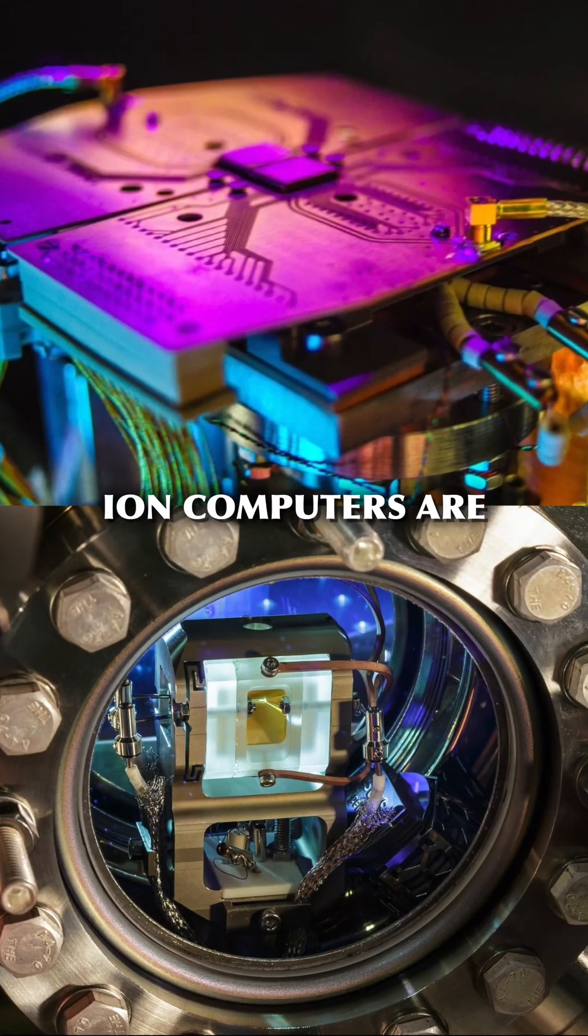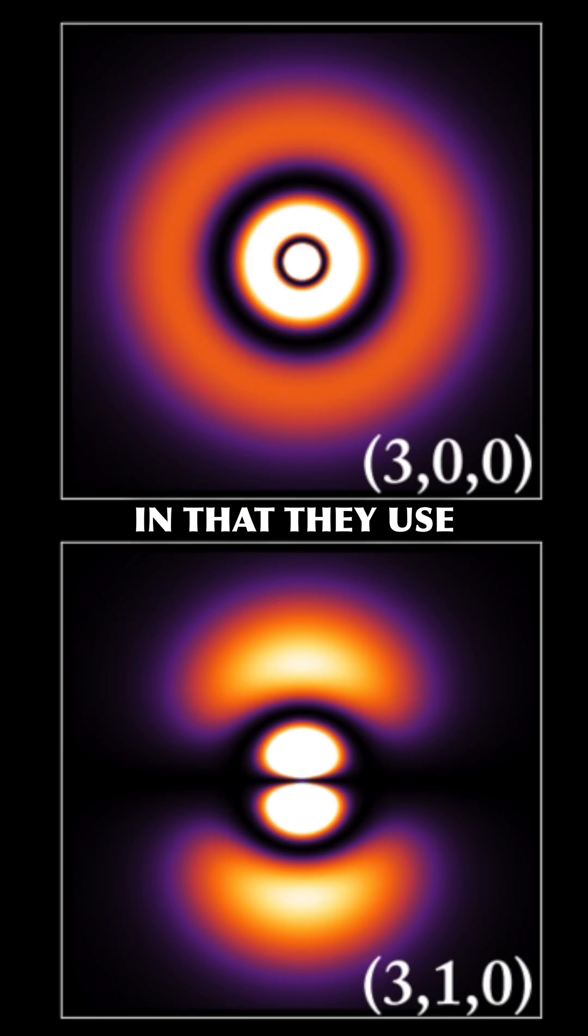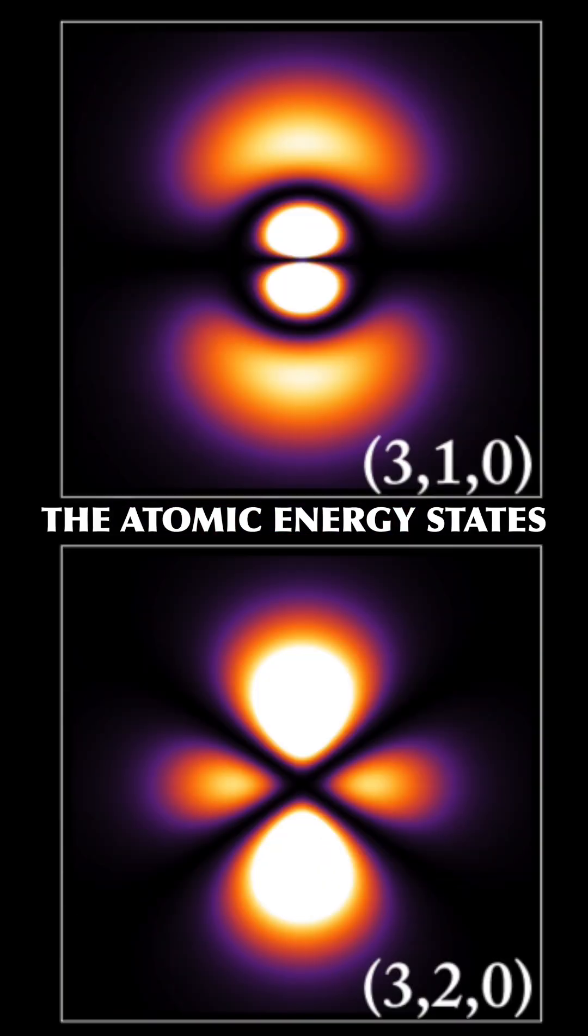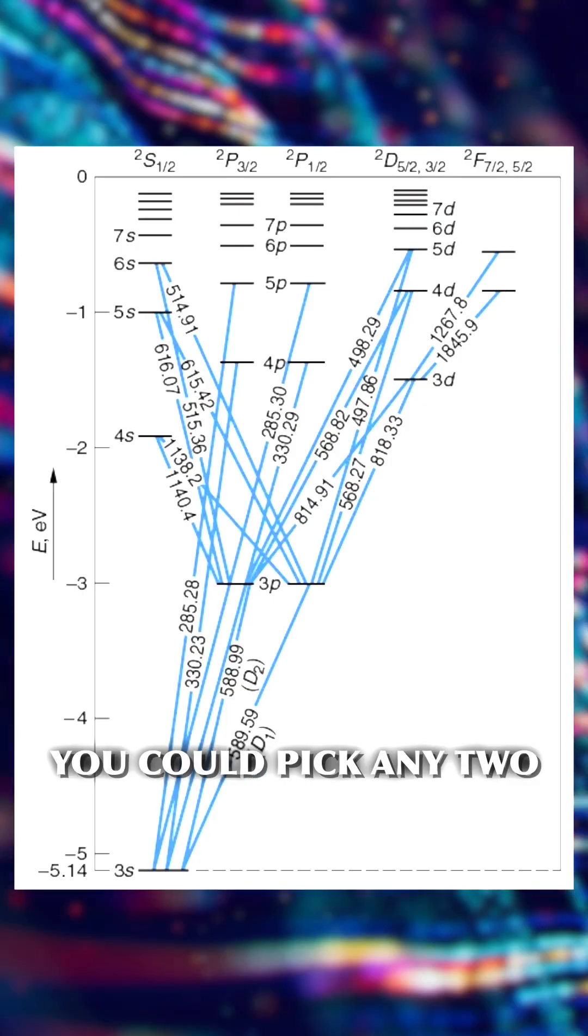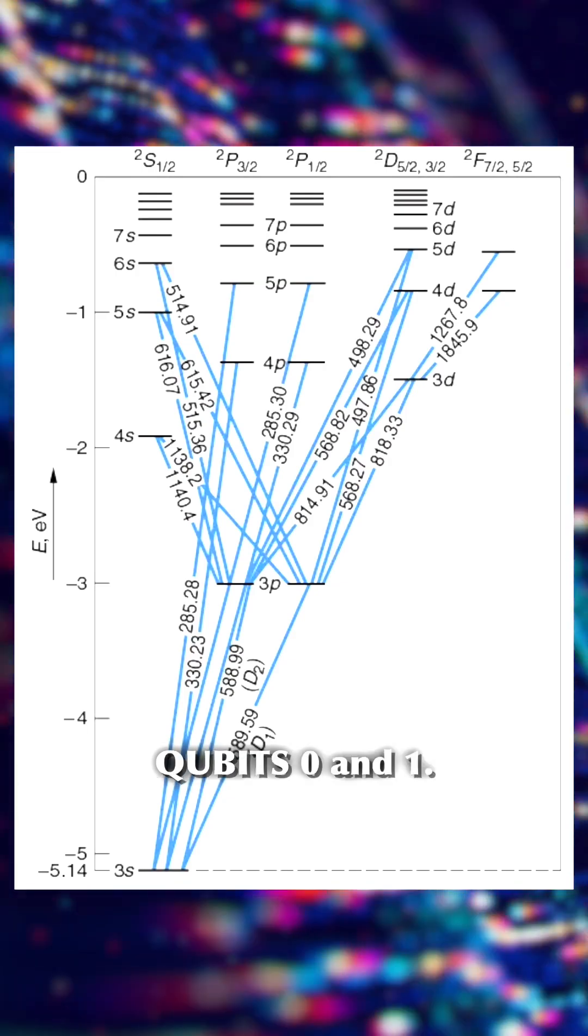The qubits of atom and ion computers are very similar in that they use the atomic energy states that their electrons can be in. And in principle, you could pick any two of those to work as qubits zero and one.